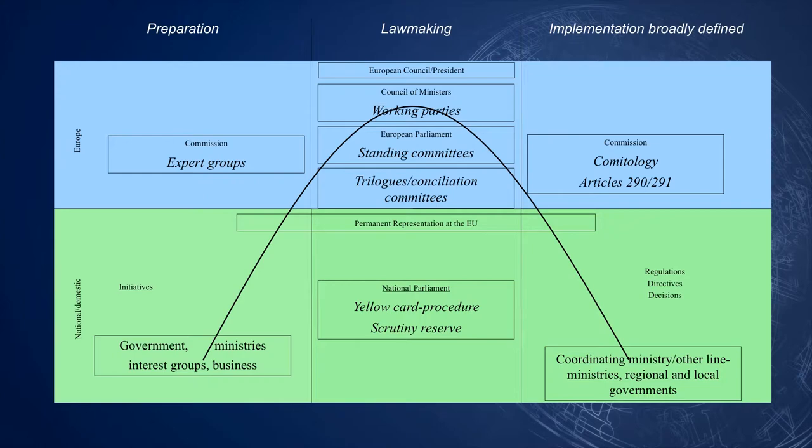Let's zoom into the initiation of a policy. This stems from the political representatives from the member states. Various interest groups or businesses may be facing a problem which they would like to resolve. To do this, they involve national policymakers to signal to Brussels. When successful, an issue is added to the political agenda of the EU.